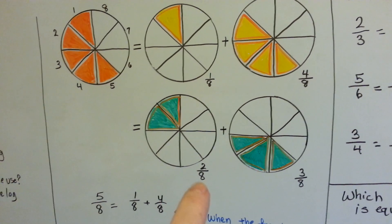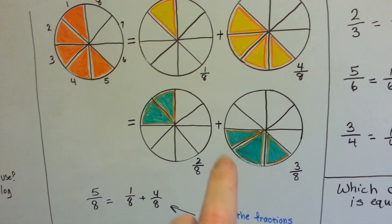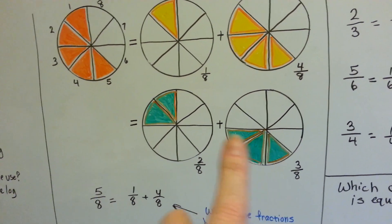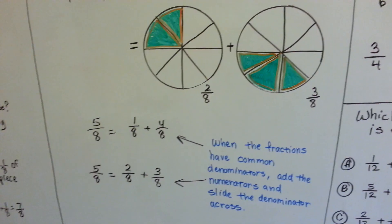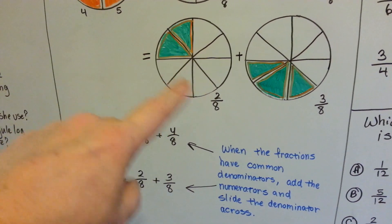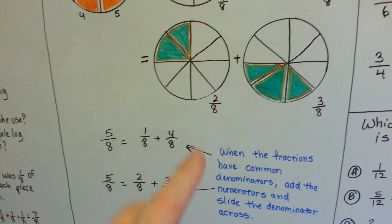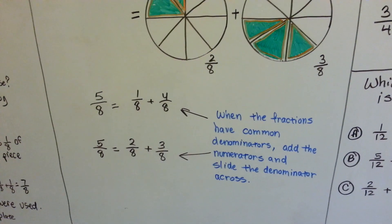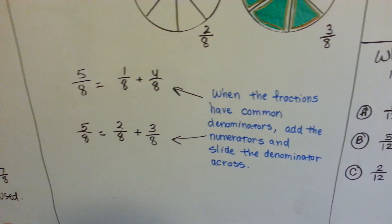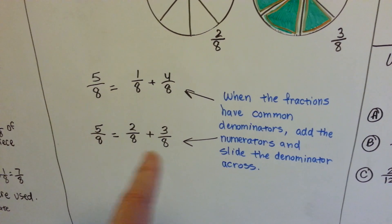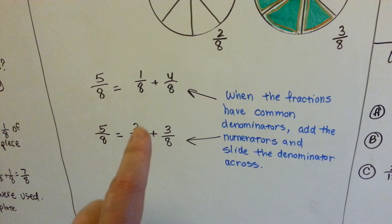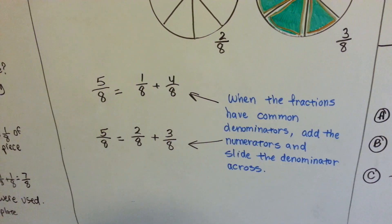If we took 2 eighths and added it to 3 eighths, we would have 5 eighths — same as over here. So, 5 eighths is equal to 2 eighths plus 3 eighths. Because we're adding the same size pieces, the same portions, the denominators are the same. When fractions have common denominators, you add the numerators and slide the denominator across, because we're adding the same portions. 1 plus 4 is 5, slide the denominator 8 over. 2 plus 3 is 5, slide the denominator over.